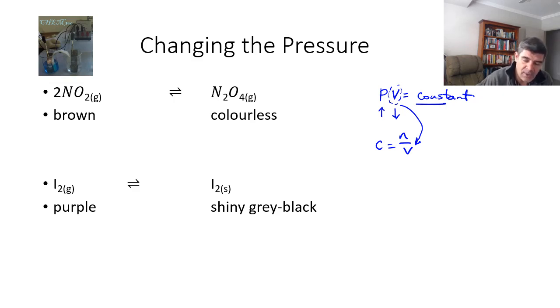So the first example is one that we have looked at previously, which is nitrogen dioxide and dinitrogen tetroxide. The most important thing when we're analyzing changes in pressure is to look at the number of gas moles. So on the left side, on the reactant side of this reaction we have two, and on the right hand side we have one. So we're looking at the coefficient in front of each of these substances. So it's a two in front of the nitrogen dioxide, and there is no number, so the assumption then is that it's one in front of the dinitrogen tetroxide.